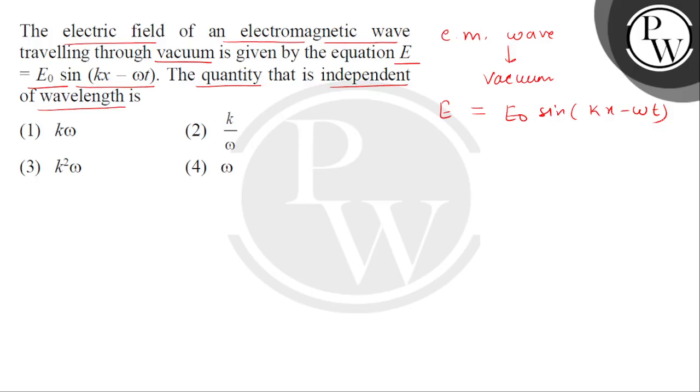तो पहले हाँ terms को देख लेते हैं E0 is the maximum value of the electric field. K is the wave vector जिसको हम लिख सकते हैं that is equals to omega divided by the speed of EMV. तो ये EMV vacuum में से पास हो रही है तो इसकी speed C constant होगी 3 multiplied by 10 to the power 8 meter per second.